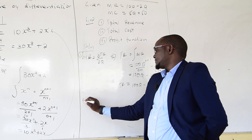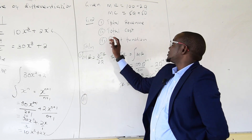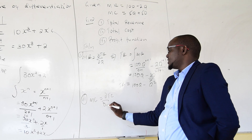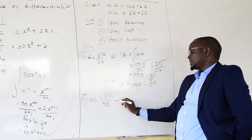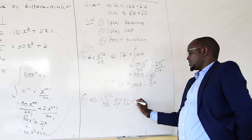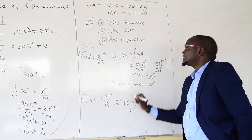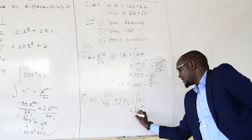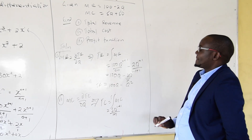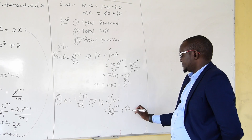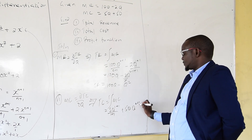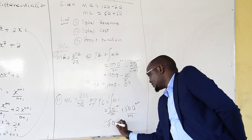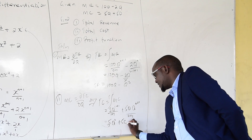Then we can get the total cost. Remember, when you are getting MC, we say it differentiates total cost with respect to Q. So to get total cost, you actually integrate MC. Integrating: we have 5q which is power 1 — you add 1 and divide by 1 plus 1, then plus 50, with q power 0 plus 1 divided by 0 plus 1. This becomes 5 over 2 q squared plus 50q.